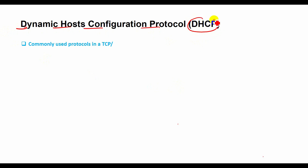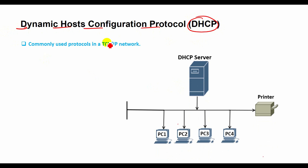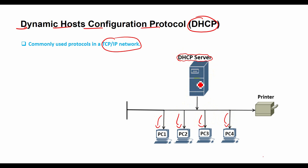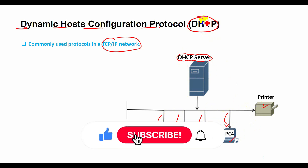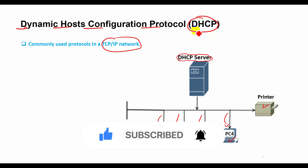Hello everyone, today I want to discuss DHCP, or Dynamic Host Configuration Protocol, one of the most commonly used protocols in a TCP/IP network. DHCP is a network management protocol used to dynamically assign an IP address to any device on a network. DHCP automates and centrally manages these configurations rather than requiring network administrators to manually assign IP addresses to all network devices.